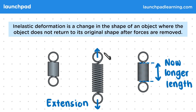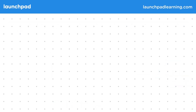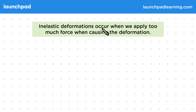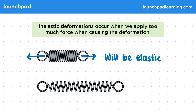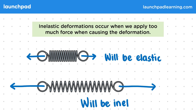So what determines if a deformation is elastic or inelastic? Well, inelastic deformations occur when we apply too much force when causing the deformation. Looking at these springs as examples, the first deformation will be elastic as a small force is used and the spring doesn't stretch enough to break any bonds. On the other hand, the second deformation will be inelastic as a larger force is used, meaning bonds are broken in the material.